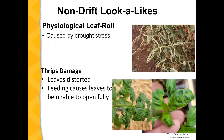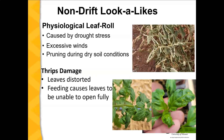There are non-drift lookalikes to be aware of. Physiological leaf roll — as seen in the top right picture — shows leaves puckered or curled upwards, but this is not an herbicide issue. It can be caused by drought stress, excessive winds during dry soil conditions, or excessive pruning. When soil conditions are very dry, you'll probably notice it first in older leaves before newer leaves. Thrips damage can also cause distorted leaves — tomato and pepper leaves may look strange but that's caused by thrip injury, which is more common in greenhouse situations.